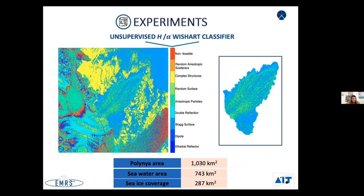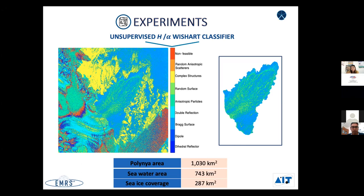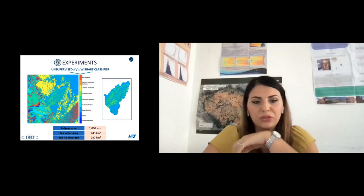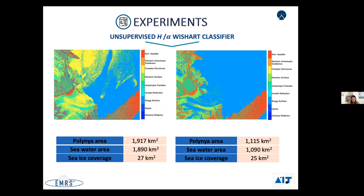This suggests using the Wishart classifier to estimate sea ice coverage within the polynya. As we can see, the polynya is characterized by two different colors: a light blue area corresponding to open sea and an extended light green area characterized by sea ice. Based on this classification, we have easily extracted the area and the percentage of sea ice inside the polynya, which is about 30%. The same analysis done for the other two datasets shows no significant presence of ice within the polynya.